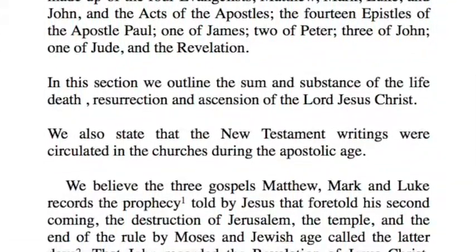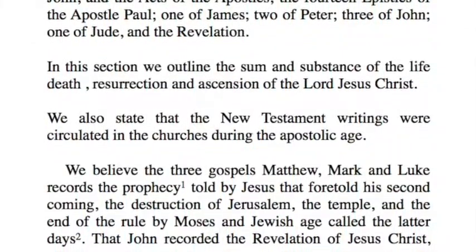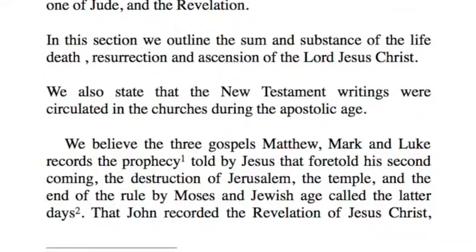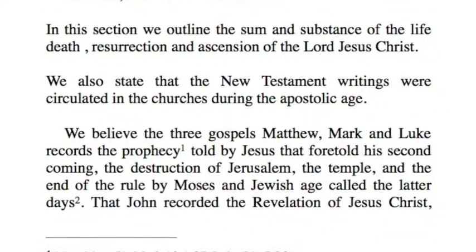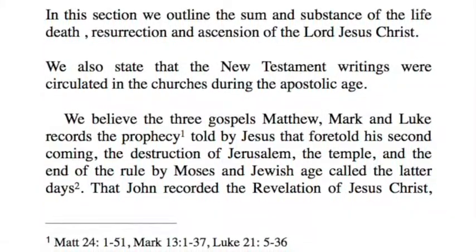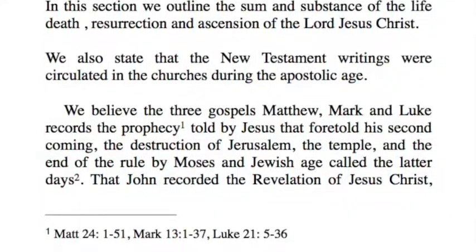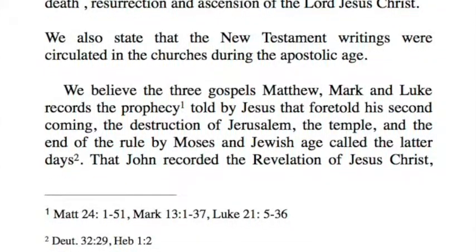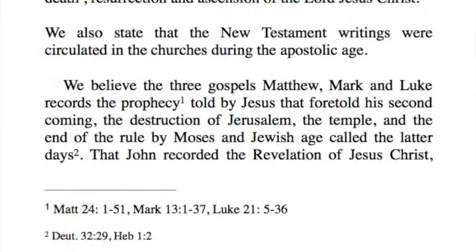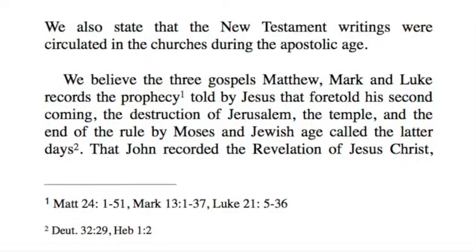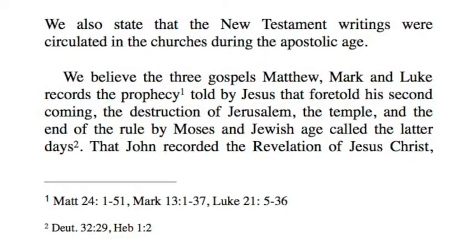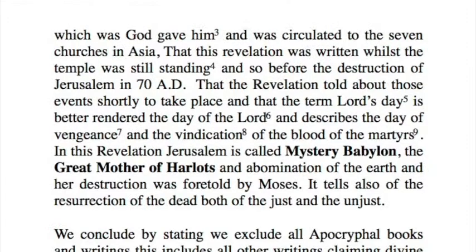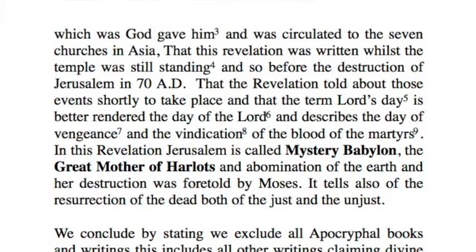In this section, we outline the sum and substance of the life, death, resurrection, and ascension of the Lord Jesus Christ. We also state that the New Testament writings were circulated in the churches during the Apostolic Age. We believe the three Gospels — Matthew, Mark, and Luke — record the prophecy told by Jesus that foretold his second coming, the destruction of Jerusalem, the Temple, and the end of the rule of Moses and the Jewish Age called the Latter Days. That John recorded the revelation of Jesus Christ, which God had given him, and was circulated to the seven churches in Asia.